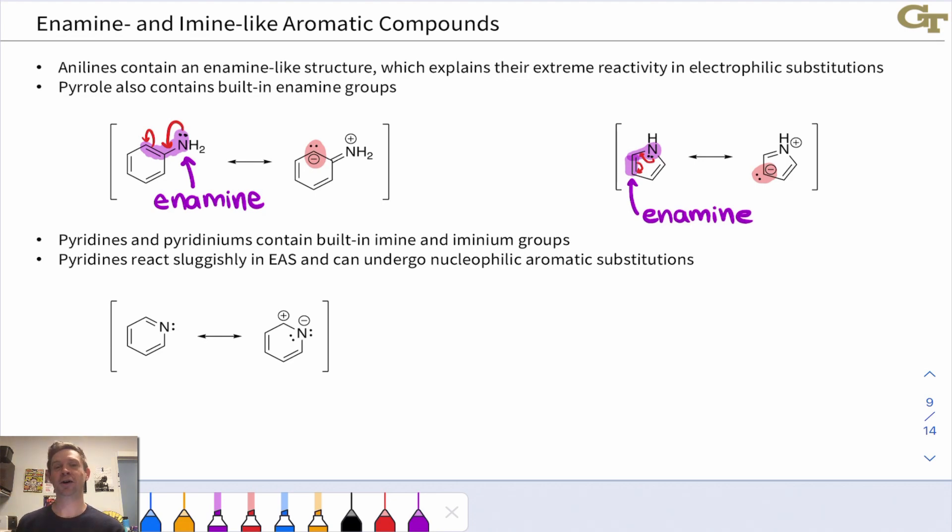On the other side of the coin, imines and iminium ions also show up in aromatic heterocycles. Pyridine is the classic example containing a built-in conjugated imine—so the C=N double bond, that's an imine. We can push the electrons in the C=N double bond to nitrogen to create a polarized structure that shows us that the carbon ortho to the pyridine nitrogen is electrophilic. This looks a lot like an imine carbon, which we've already talked about being analogous to a carbonyl carbon, so it's no surprise that carbon is a pretty good electrophile.